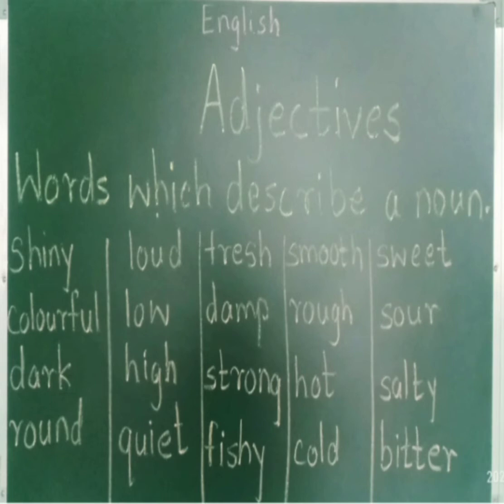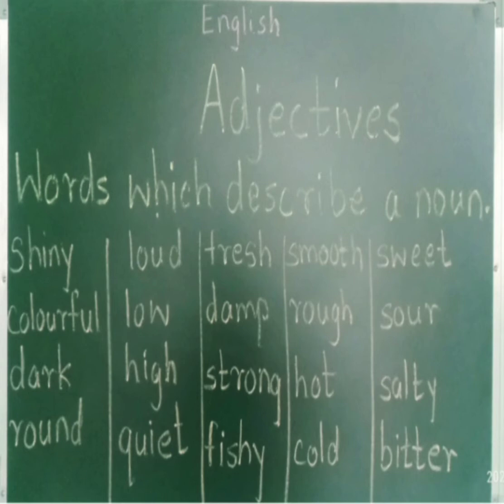Now, children, we can describe any noun in color, size, sound, shape, number, taste, weather, or texture. These are the basic things from which we can identify an adjective. Here are some examples which we can describe using our sense organs. Do you know how many sense organs do we have? We have five sense organs: eyes, ears, nose, tongue, and our skin.